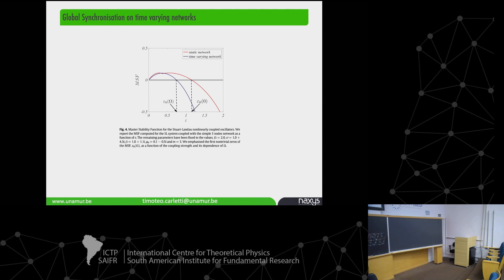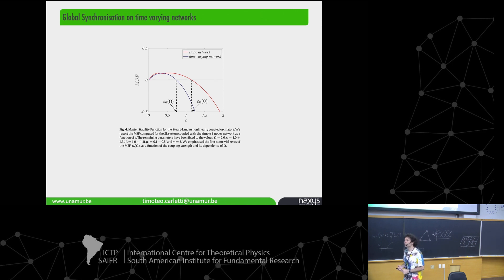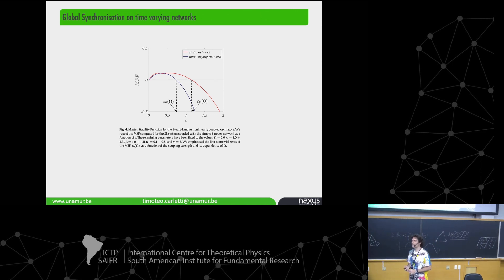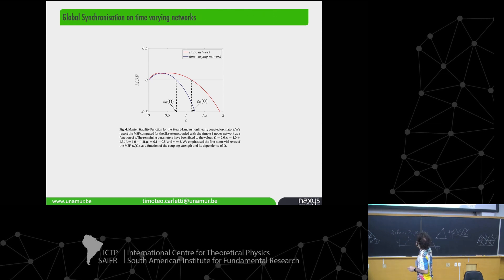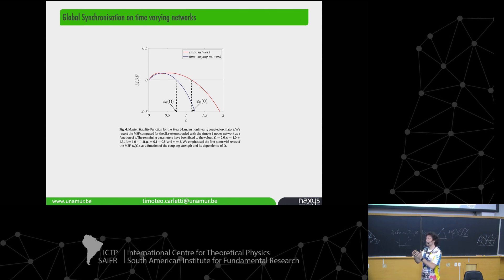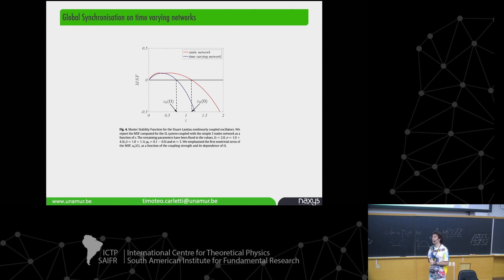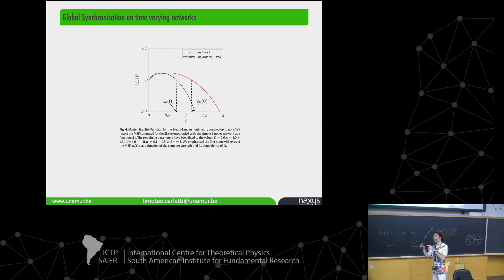Question: For the Stuart-Landau and Lorenz cases, do you know if there exists a rescaling of the coupling that collapses the two curves? That is, would the time-varying case be equivalent to the static one by some rescaling of epsilon? Answer: Good idea — I didn't try. To prove that the time-varying threshold is always smaller I used algebraic tools, but I didn't try the rescaling. If a positive rescaling exists, then yes, the temporal case would be equivalent to the static one by rescaling the coupling strength.